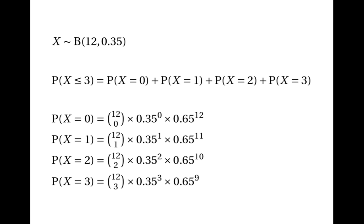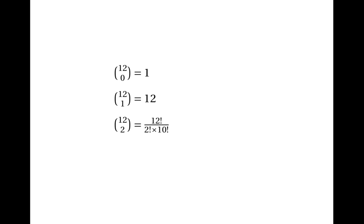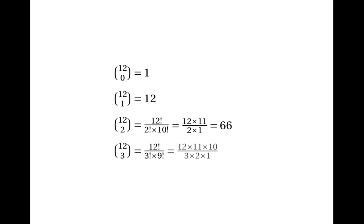The formula can tell us each of those probabilities separately, but we need to work out 12 choose 0, 12 choose 1, 12 choose 2 and 12 choose 3. 12 choose 0 is 1 (the leftmost number in a row of Pascal's triangle). 12 choose 1 is 12. 12 choose 2 is 12 times 11 over 2 times 1, which is 66. 12 choose 3 is 12 times 11 times 10 over 3 times 2 times 1, which is 220.